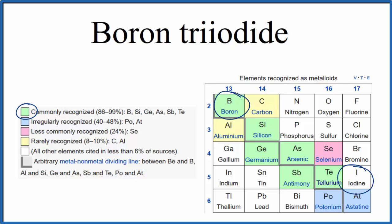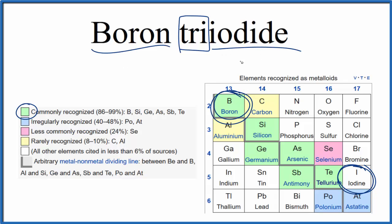So when we have a metalloid and a non-metal, this is usually going to be considered a molecular or covalent compound. The 'tri' in the name also makes us think it'll be a covalent compound. So let's write the formula for boron tri-iodide, treating it as a molecular or covalent compound.